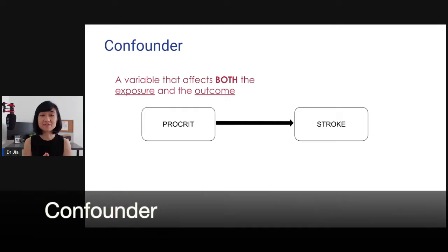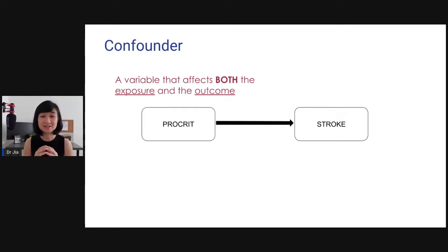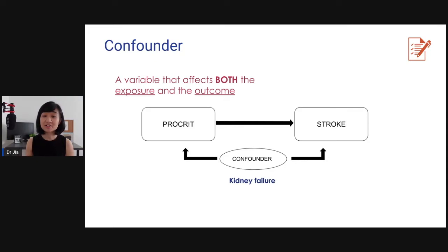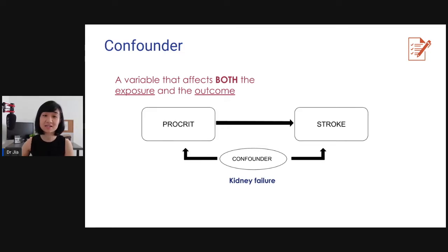The first thing we're going to learn today is confounder. A confounder is a variable that affects both the exposure and the outcome. So here, kidney failure is a confounder because patients with kidney failure on dialysis tend to need procreate injection. But because kidney failure also increases cardiovascular risk, it leads to a higher risk of stroke. Since kidney failure affects both the exposure and the outcome, it is a confounder.